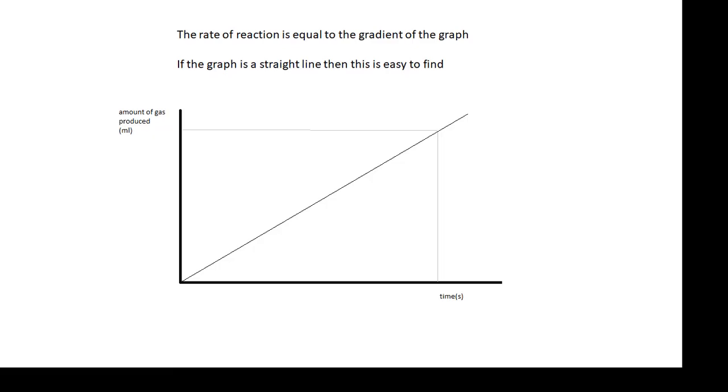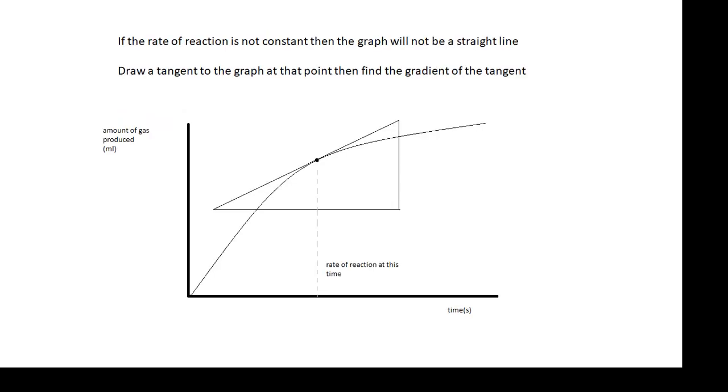The rate of reaction would be the gradient of this graph. If you did a graph of the amount of gas produced against time, if it's a straight line, then the gradient tells you the rate of reaction. If it isn't a straight line, then the rate of reaction at any particular point in time is the gradient. And you'll need to be able to work out the gradient from a graph by drawing a tangent.